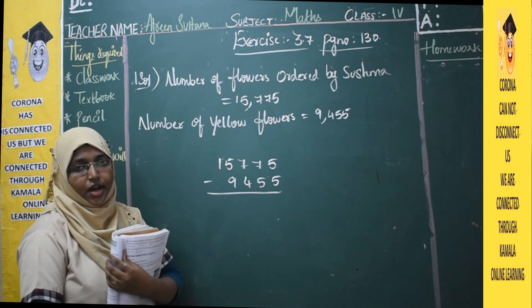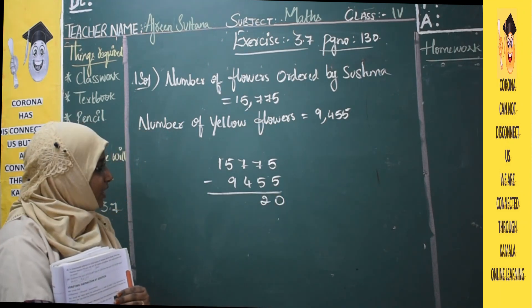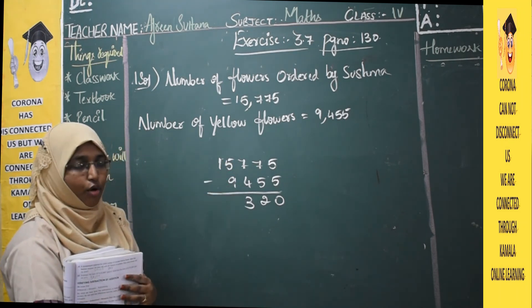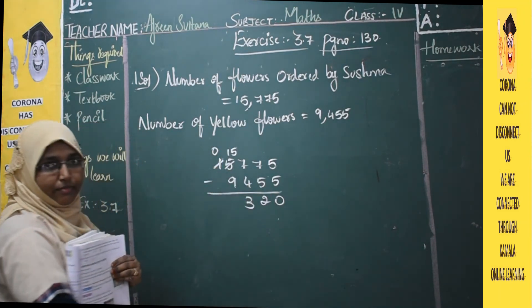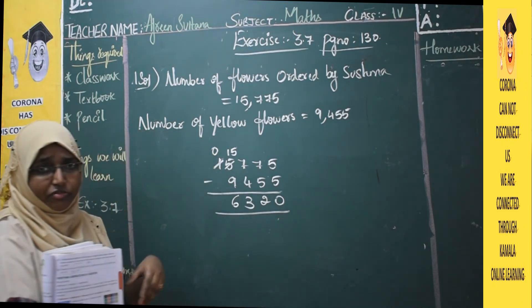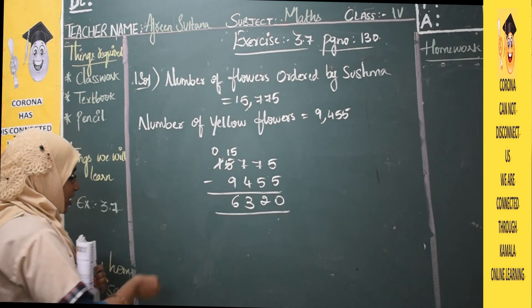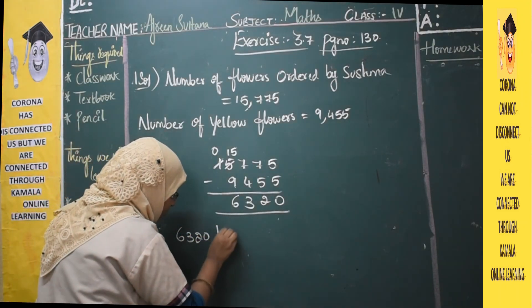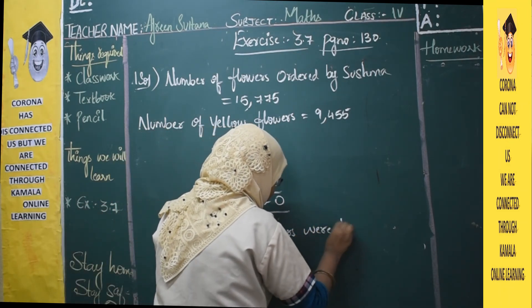Now subtract: 5 minus 5 is 0. Next, 7 minus 5 is 2. Next, 7 minus 4 is 3. Now we cannot subtract 9 from 5, so we need to borrow. Borrow from the next digit — it becomes 0 and the 5 becomes 15. 15 minus 9 is 6. So the answer is 6,320 white flowers. Therefore, 6,320 white flowers were there.